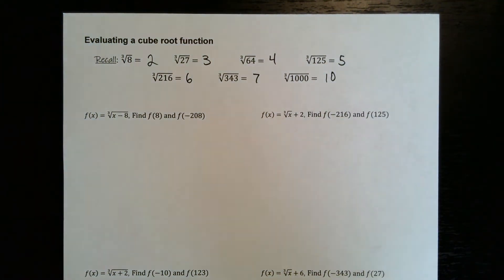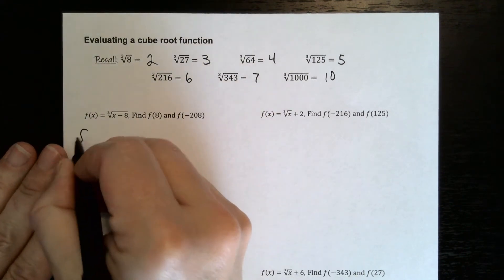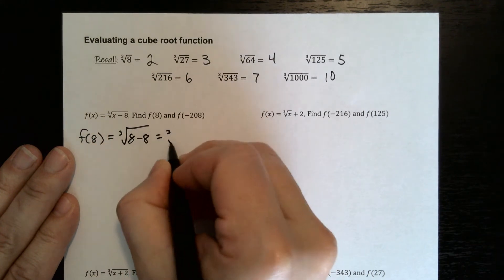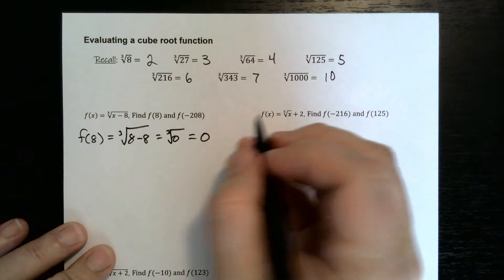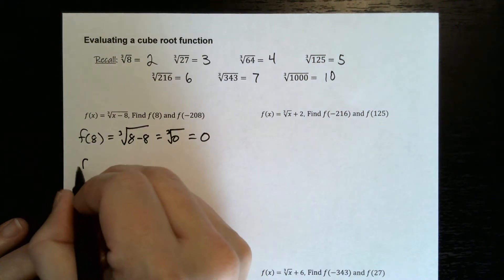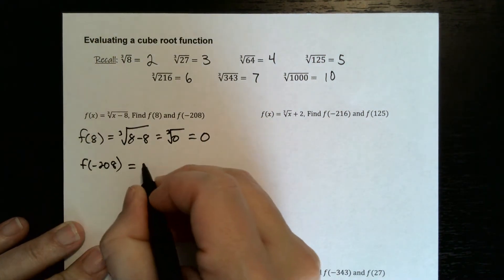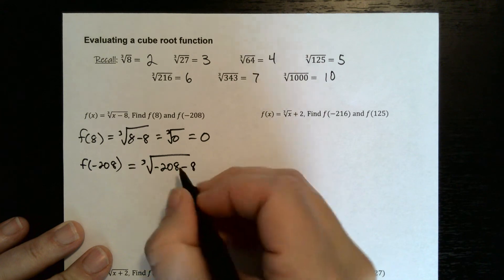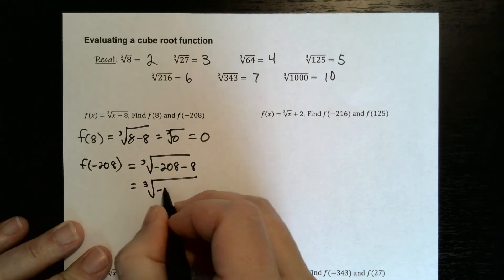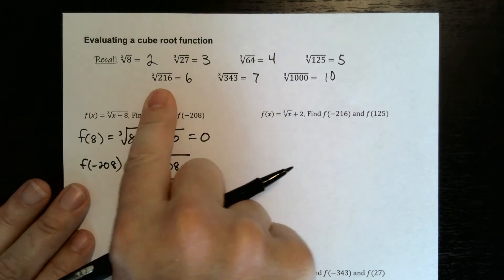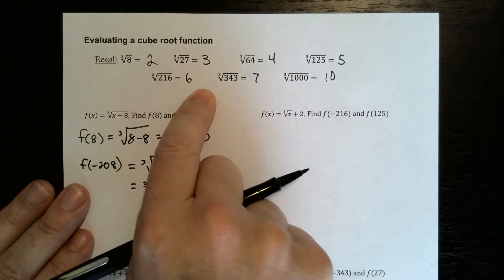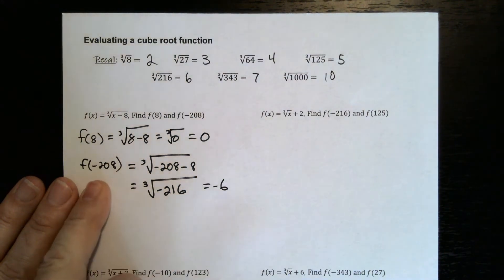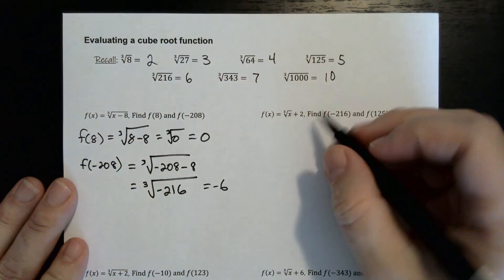For f of x equals the cube root of x minus 8: f of 8 equals the cube root of 8 minus 8, which is the cube root of 0, so f of 8 equals 0. For f of negative 208, that's the cube root of negative 208 minus 8, which is the cube root of negative 216. The cube root of 216 is 6, so the cube root of negative 216 is negative 6. Therefore f of negative 208 equals negative 6.